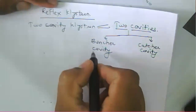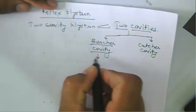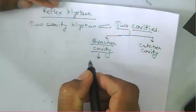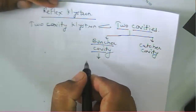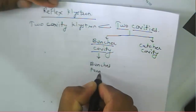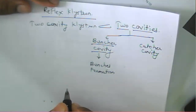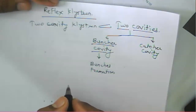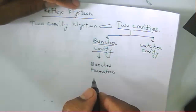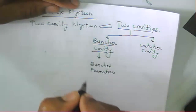There are two types of cavity: one is the buncher cavity and another is the catcher cavity. In a buncher cavity, when electrons interact with the cavity gap, bunches formation takes place. Because of the RF signal input to that cavity gap, electrons will accelerate and decelerate through the gap of the cavity — that's why bunches formation takes place.